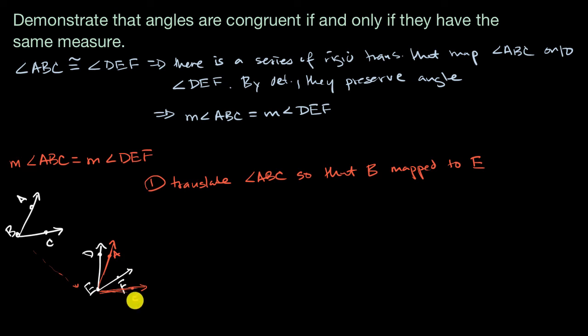Sometimes you might see a notation A prime, C prime. And this is where B would get mapped to. And then the next thing I would do is, I would rotate angle ABC about its vertex, about B, so that ray BC coincides with ray EF.